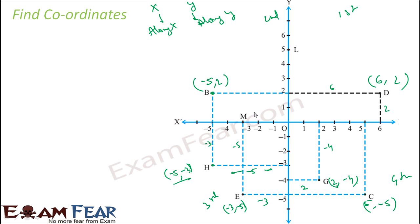For point L, the x-coordinate along the x-axis is 0 — drawing a line shows no horizontal distance. The y-coordinate along the y-axis is 5. So point L is 0 comma 5.